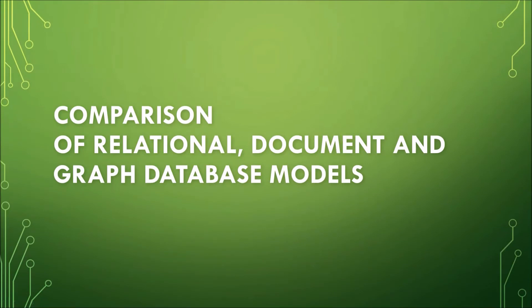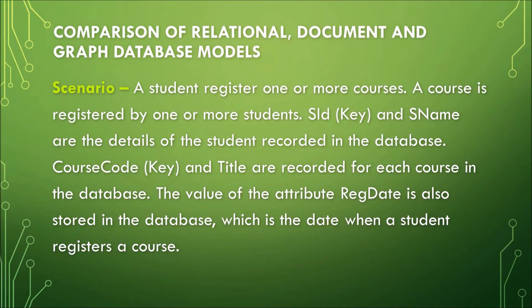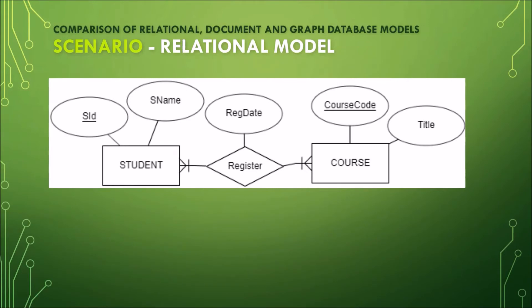Let us compare relational models with document-oriented models and graph database models using this scenario: a student registers to one or more courses, and a course is registered by one or more students. SID (the key) and S_name are the student's details, while course code (the key) and title are recorded for each course. The attribute reg_date — the date when a student registers for a course — is also stored. This gives us the corresponding ER diagram.